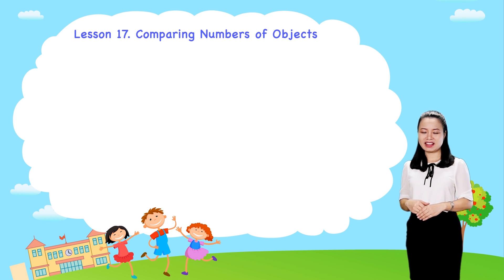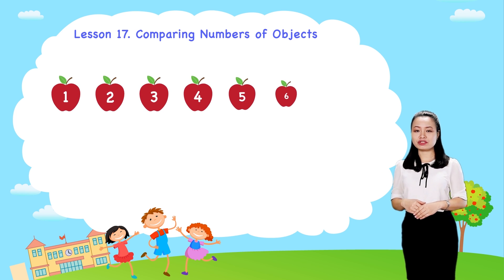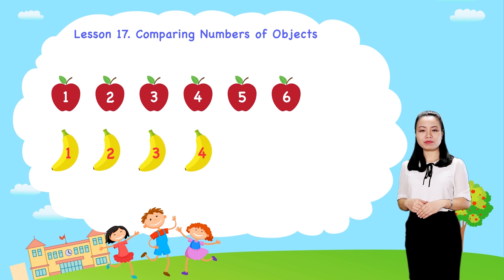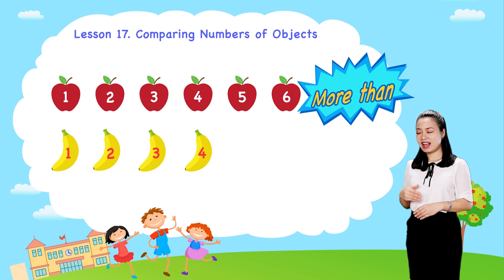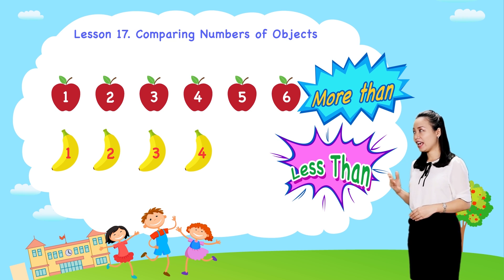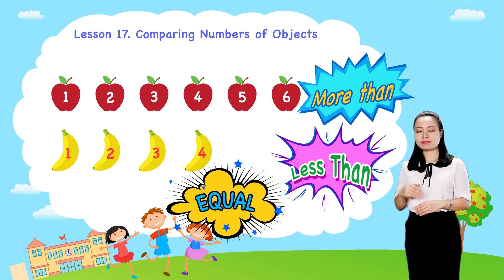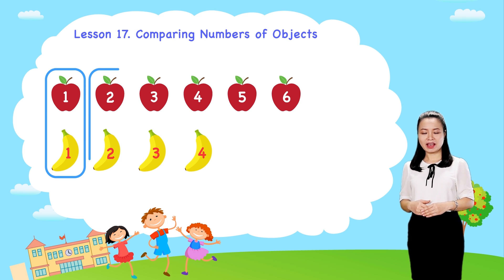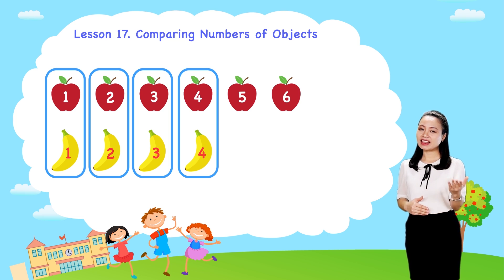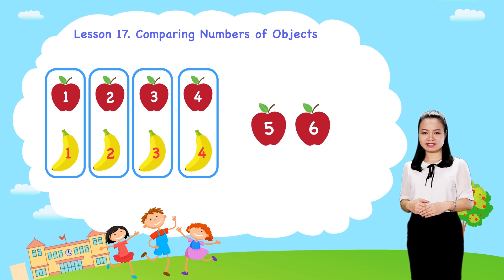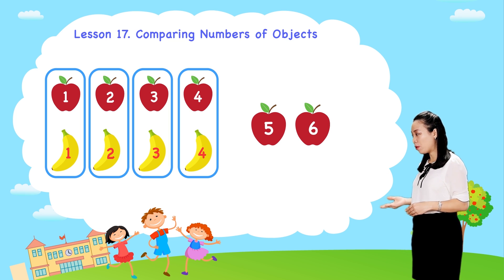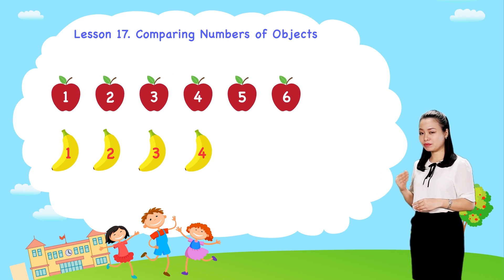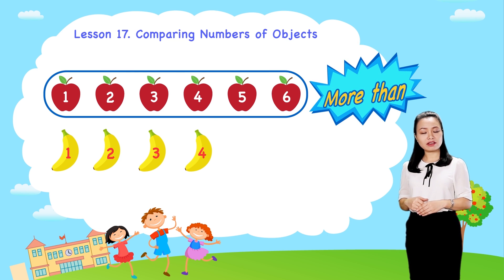Look, we have six apples and four bananas. Is the number of apples more than, less than, or equal to the number of bananas? Let's pair an apple with a banana. Then, two apples are unpaired because there are more apples than bananas. So, the number of apples is more than the number of bananas.